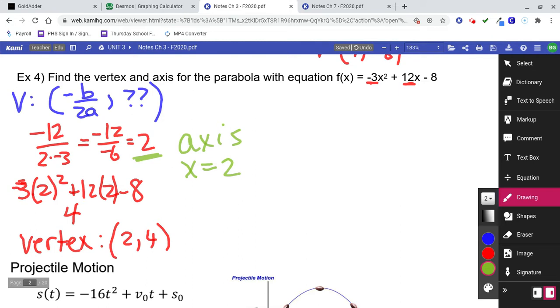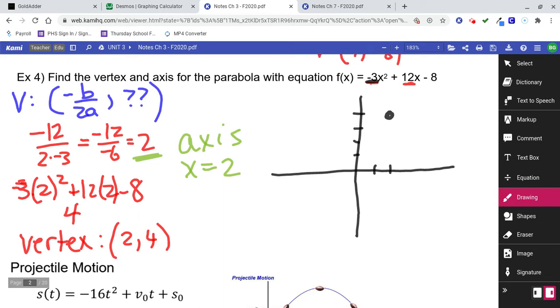So let's think about the graph of that. I know it doesn't ask me to graph, but I want to think about that anyway. So if the vertex is at 2, 4, let's look at this. 1, 2, 1, 2, 3, 4. The vertex is right there, and I know because this is a negative 3, it's going to go upside down.